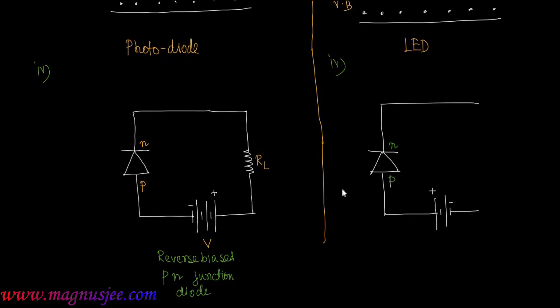For the reverse biased p-n junction diode (photodiode) we must use a strong battery, but for the forward biased p-n junction diode (LED) there is no need to use a strong battery. The EMF of this weak battery is V, which can produce forward current, and a load resistance R_L is connected.